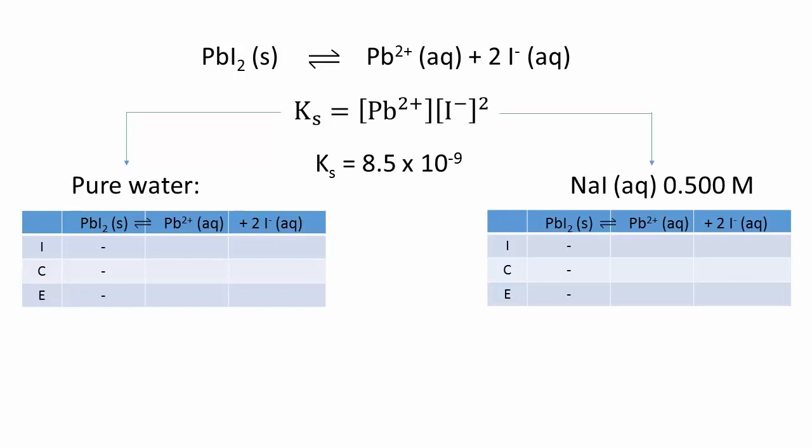In pure water, both ion concentrations are zero. In the 0.5 molar solution, the initial concentration of Pb2+ is also zero, but the initial iodide concentration is 0.5 molar given the presence of the sodium iodide salt.